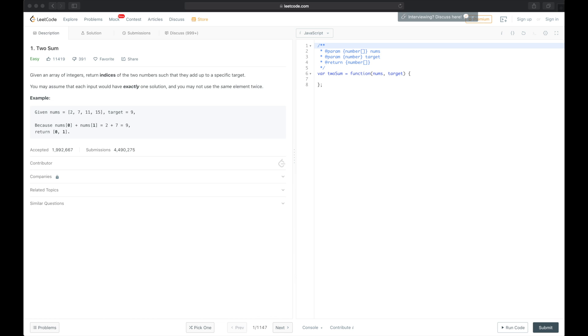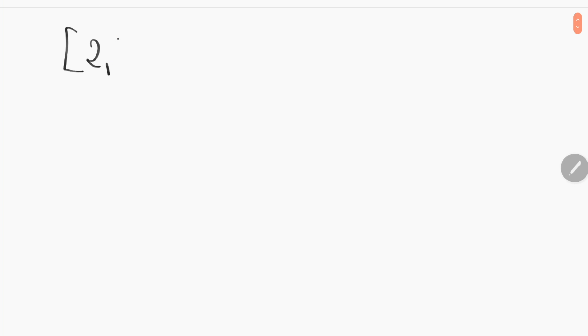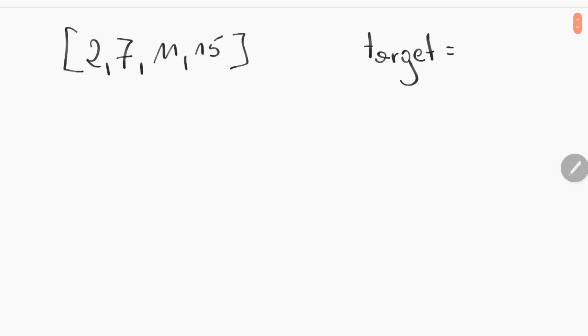Let's switch to the whiteboard. Maybe we can change the target so it may be a little bit easier to understand how this is working. We have nums which is [2, 7, 11, 15] and the target is maybe 18.